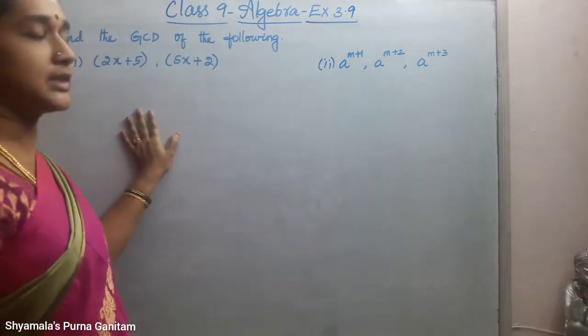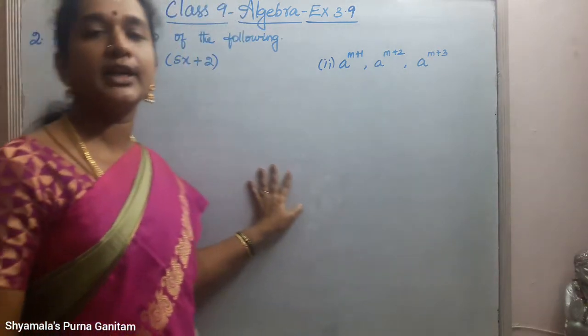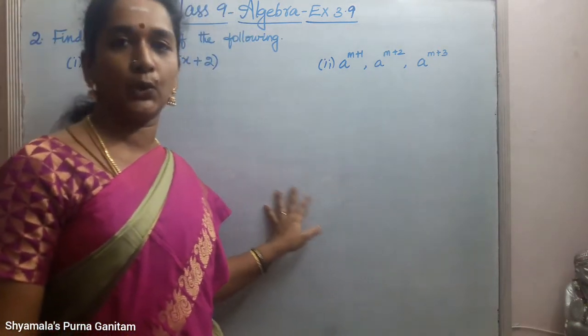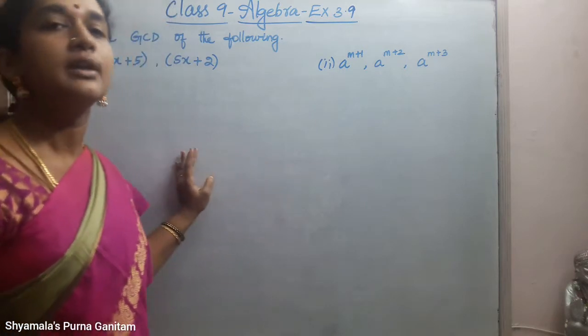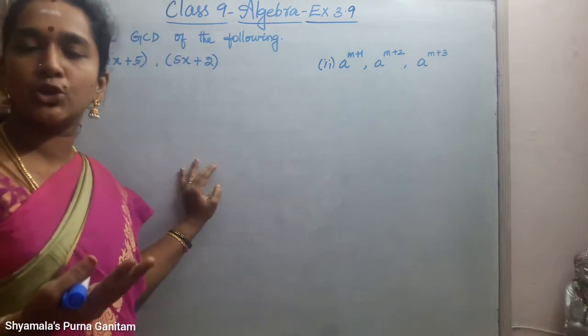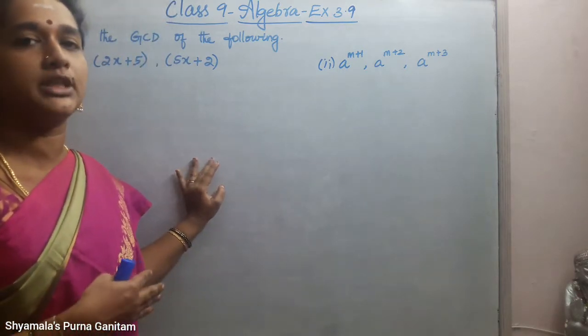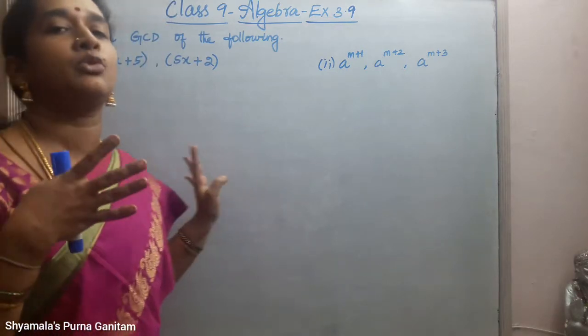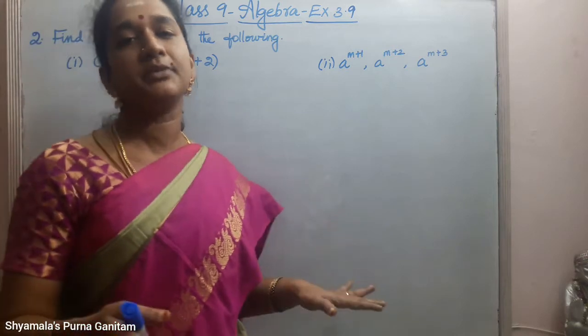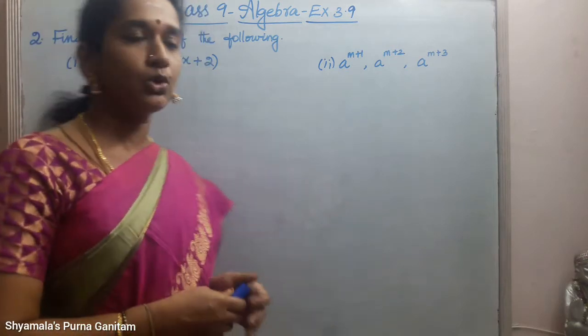So, the 2nd subdivision: find the GCD of the following. The previous subdivision was also GCD, and this one is also GCD. They have given a variety of sums.